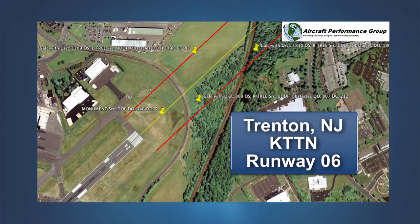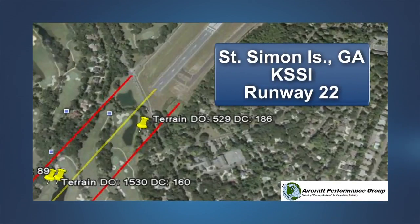Hutchinson, Kansas is not an isolated example. A review of the obstacle notes on many IFR departure procedures reveals that the presence of low, close-in obstacles can be a significant limitation on takeoff weight. In addition, there are many other obstacles that are too low to affect the SID or IFR departure procedure standards, but must be considered in the engine-out analysis.